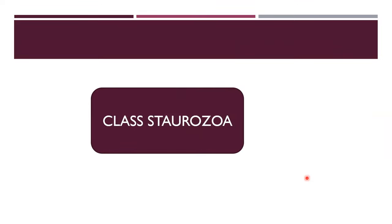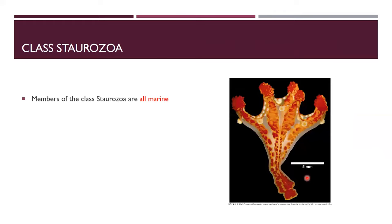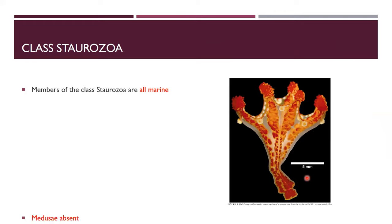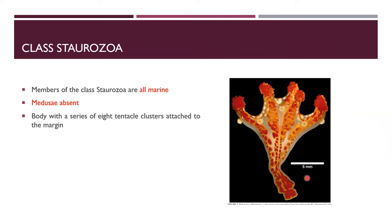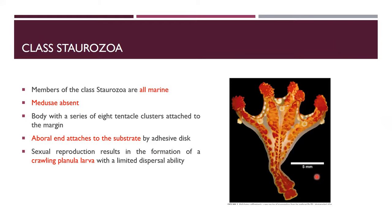Class Staurozoa members are all marine. The medusa is absent. The body has eight tentacle clusters attached to the margin — a very important exam point. The aboral end attaches to the substrate. Sexual reproduction results in the formation of crawling planula larvae.